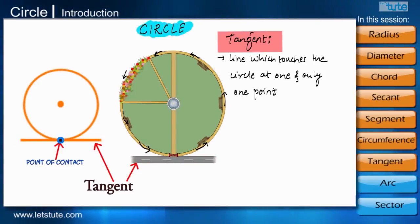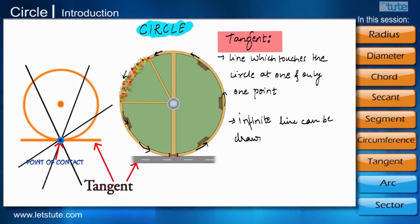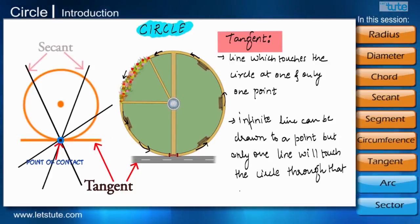However, there can be infinite lines that can be drawn to a point on the circle. But, there is only one line that touches the circle through that point.